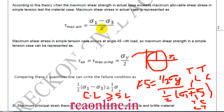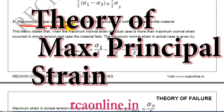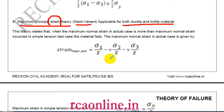This is the theory from which the most questions have been asked in the Engineering Services exam. Now for the third theory — Maximum Principal Strain theory. As the name suggests, we compare the maximum principal strain. This is given by Saint-Venant and is mostly applicable for ductile material; it does not give good results for brittle material. Given three stresses sigma one, sigma two, sigma three, the maximum strain is sigma one/E minus mu times sigma two/E minus mu times sigma three/E.